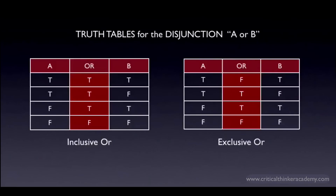Here are the truth tables for the inclusive or and the exclusive or. With the inclusive or, if either A or B is true, then the disjunction as a whole is true. The only case where it's false is if both A and B are false. The truth table for the exclusive or is exactly the same except for the first row, where both A and B are true — the exclusive or says A and B can't both be true at the same time, so for that combination the disjunction is false.